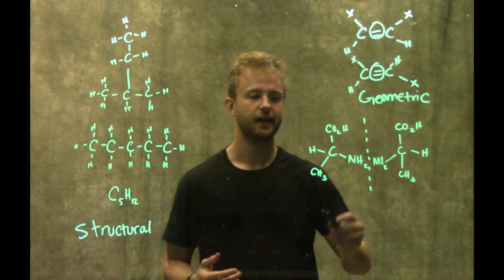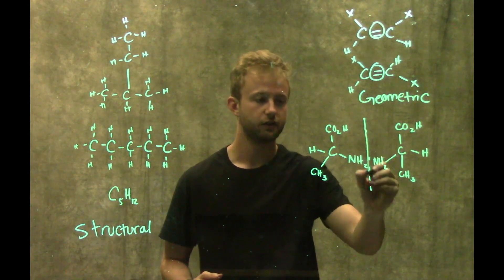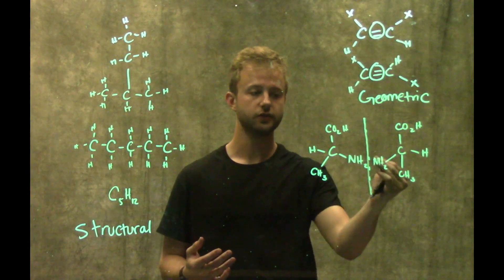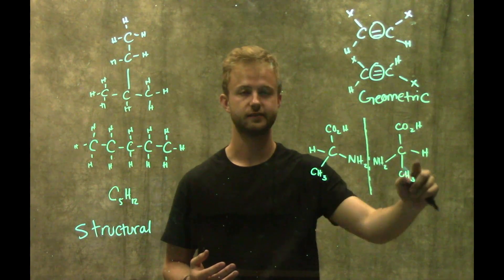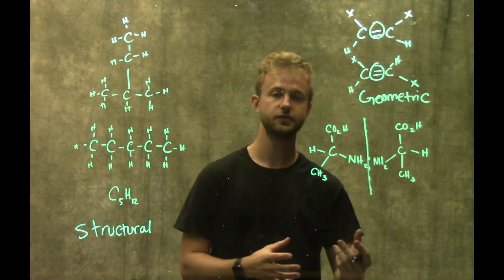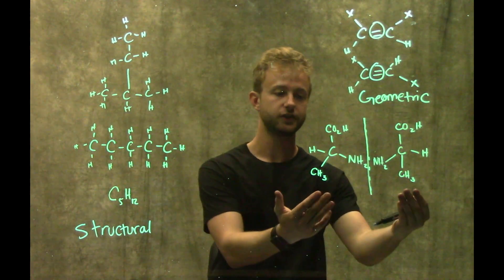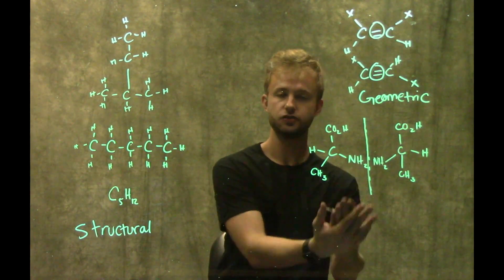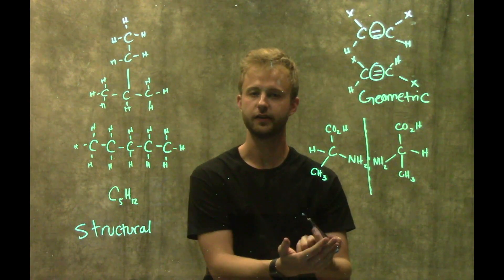What that means is imagine that this line right here is a mirror. So when this molecule looks in the mirror, this is the reflection that it sees right here. What makes these two enantiomers is that when you get this reflection, we can't stack these two molecules on top of one another and have them line up perfectly.